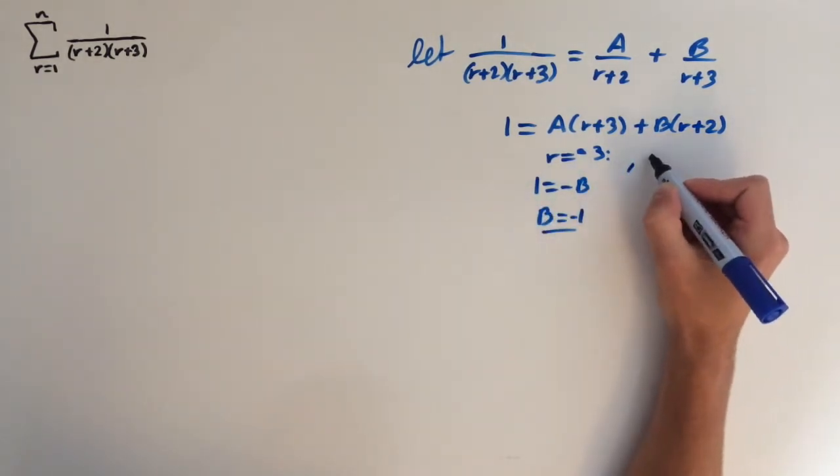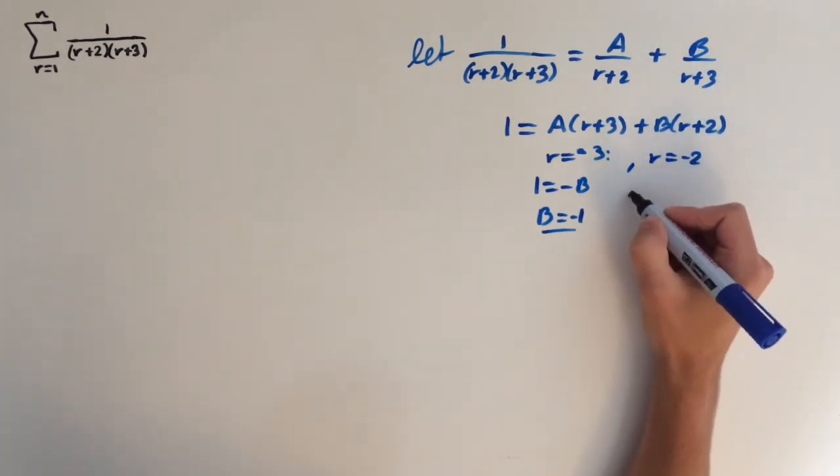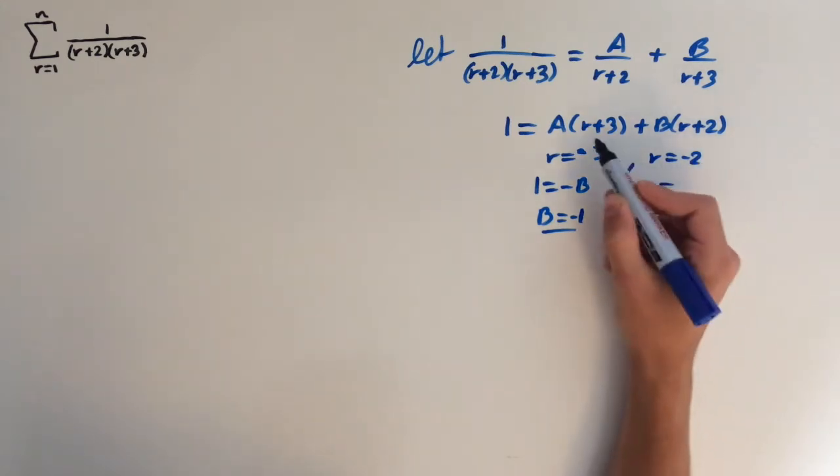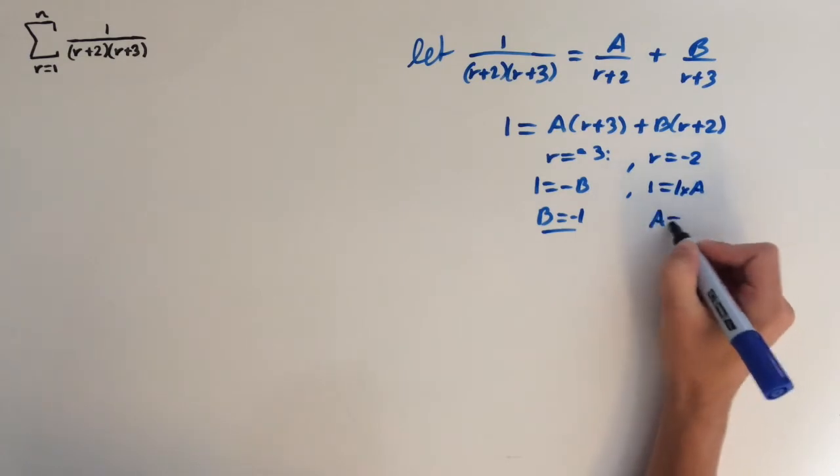And now if we input r equals minus 2, this bracket right here is going to cancel. So we're going to be left with 1 equals minus 2 plus 3, which is just 1. So 1 times a, which means that a equals 1.